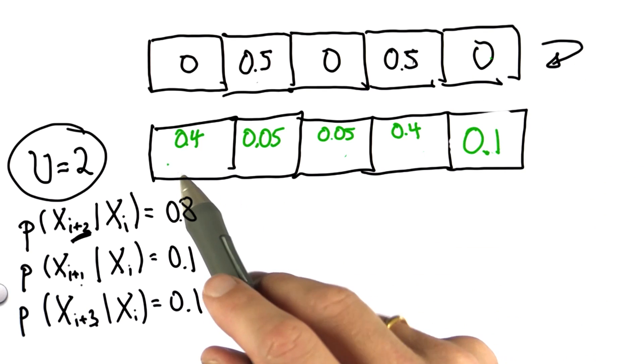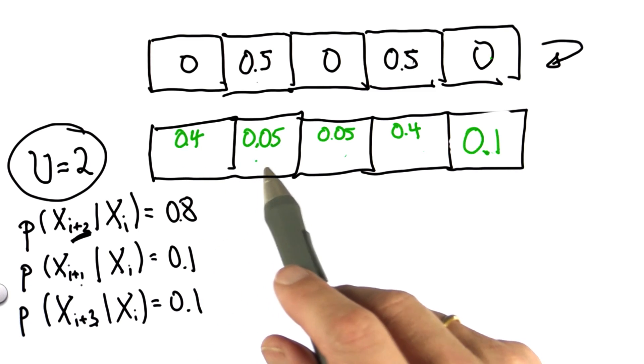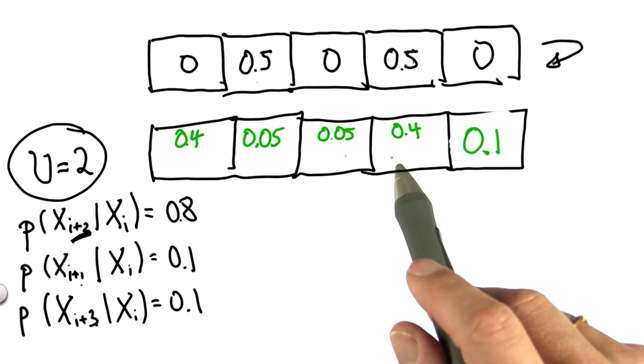So this is the final answer, 0.4, 0.05, 0.05, 0.4, and 0.1.